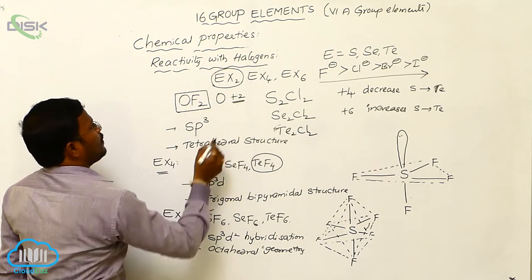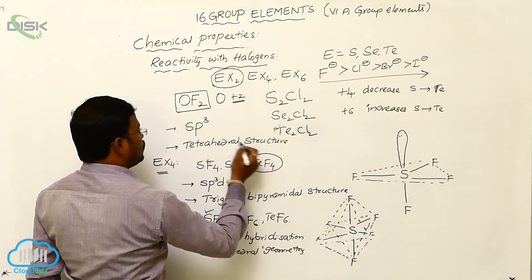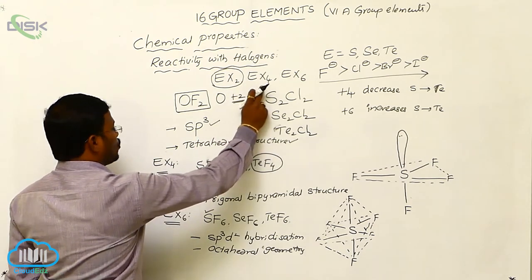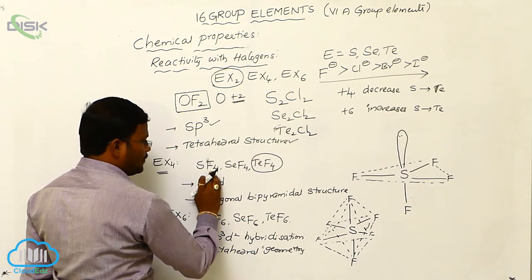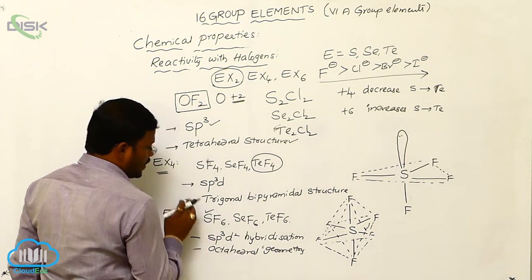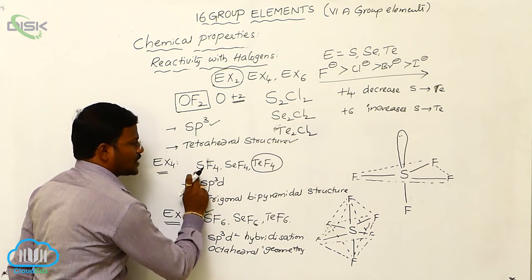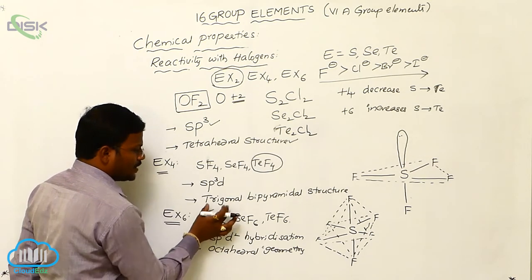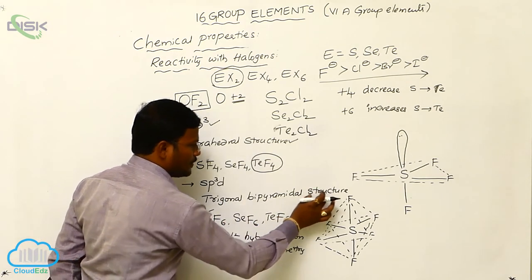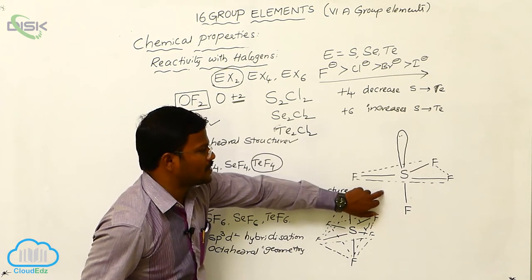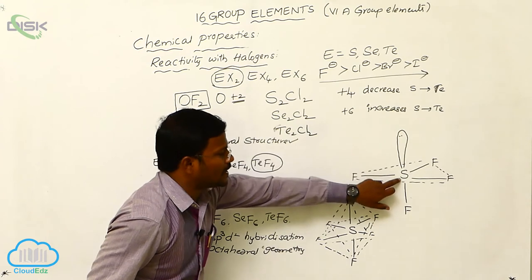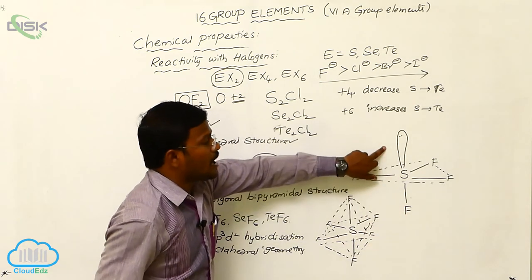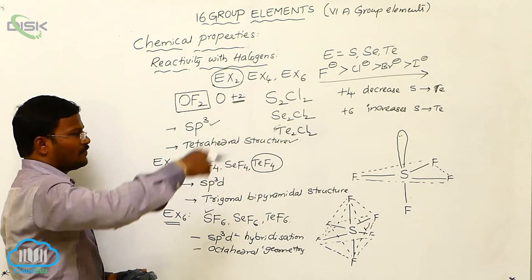In EX2 type halides, sulfur, selenium, and tellurium with SP3 hybridization exist in tetrahedral geometry. In EX4, sulfur, selenium, and tellurium show SP3D hybridization, giving trigonal bipyramidal geometry. In this trigonal bipyramidal geometry, three fluorines are linearly arranged with sulfur, one fluorine is positioned vertically on one side, and a non-bonding pair of electrons occupies the top side of the trigonal structure.